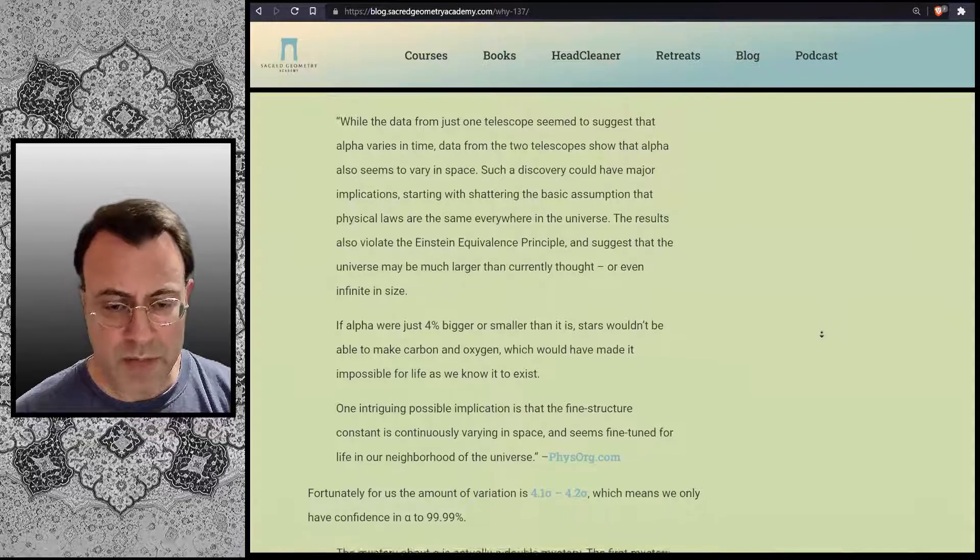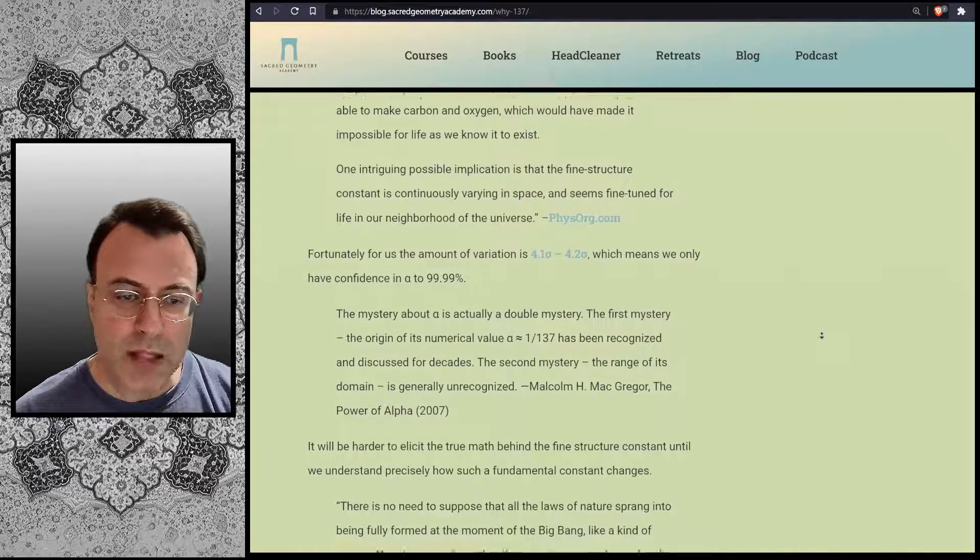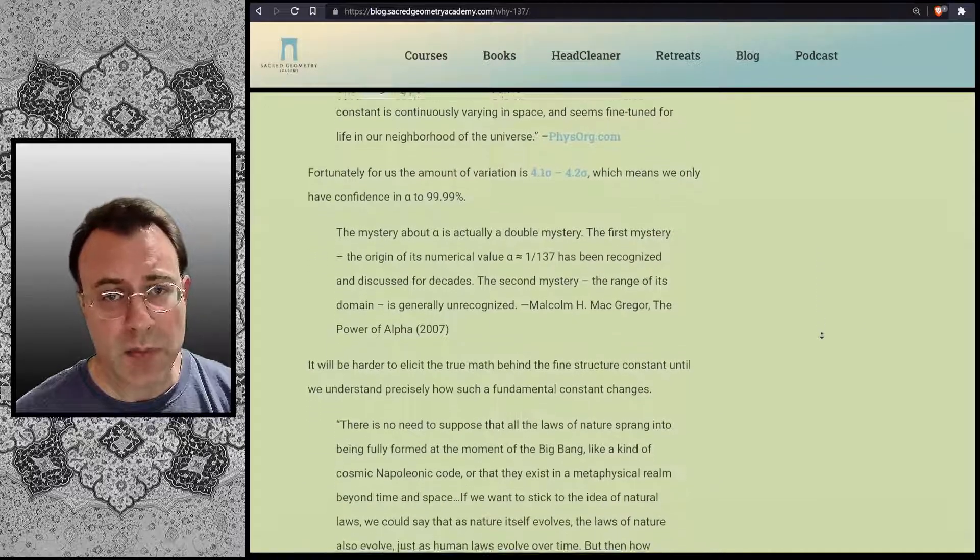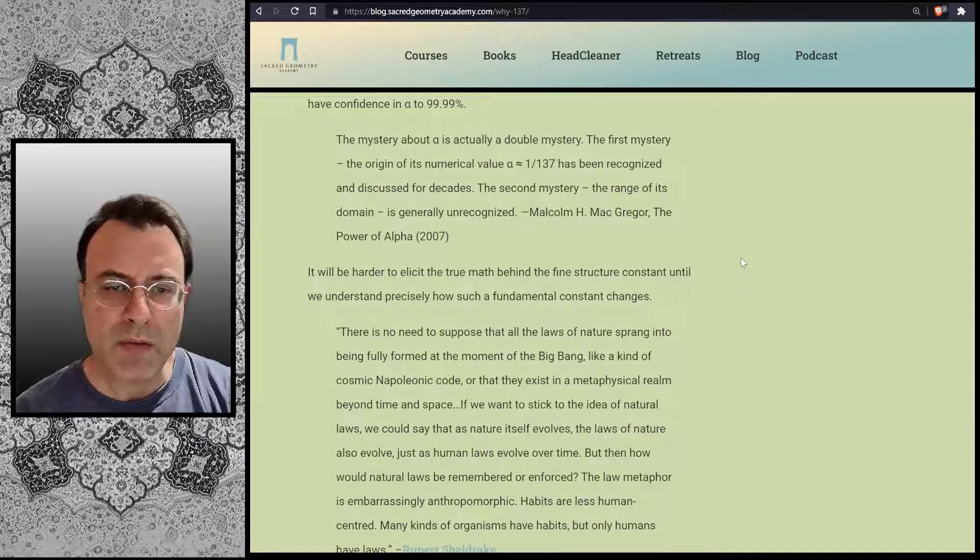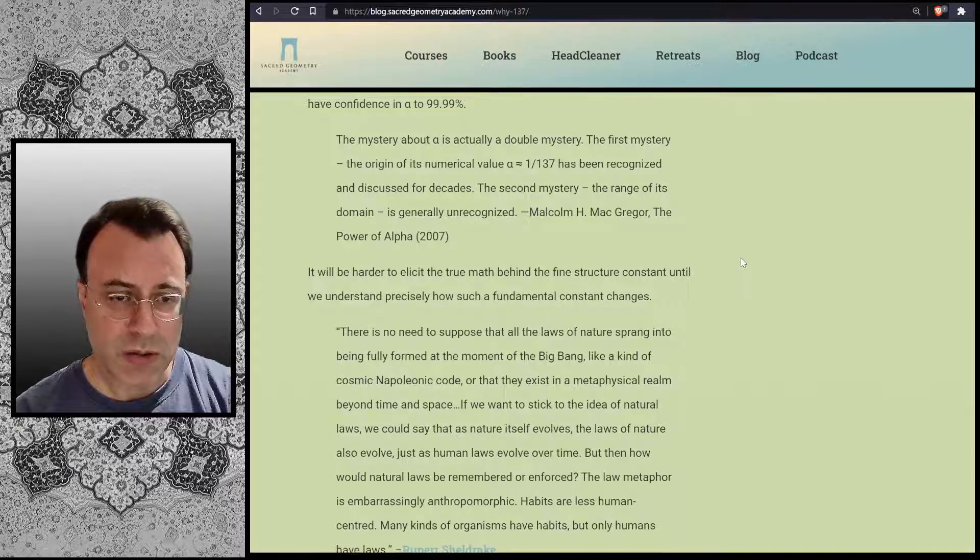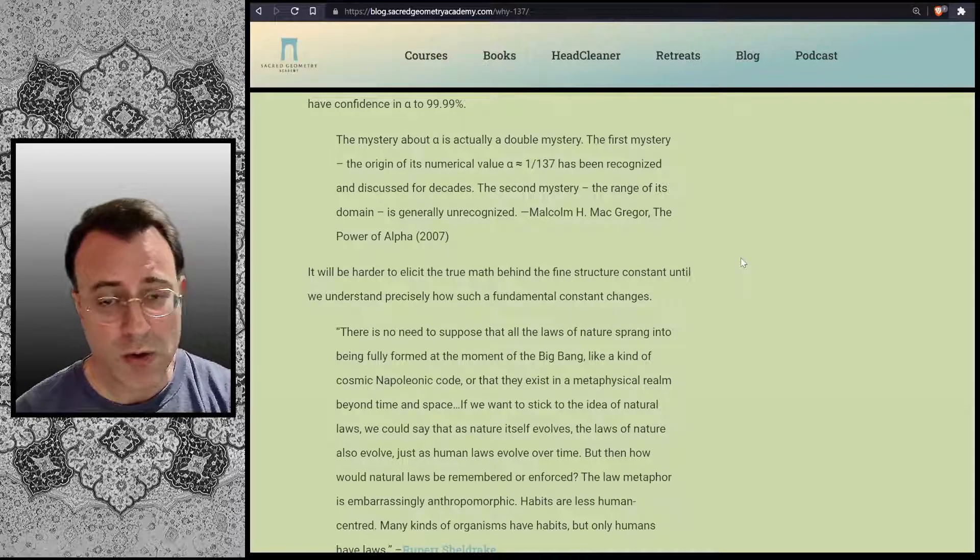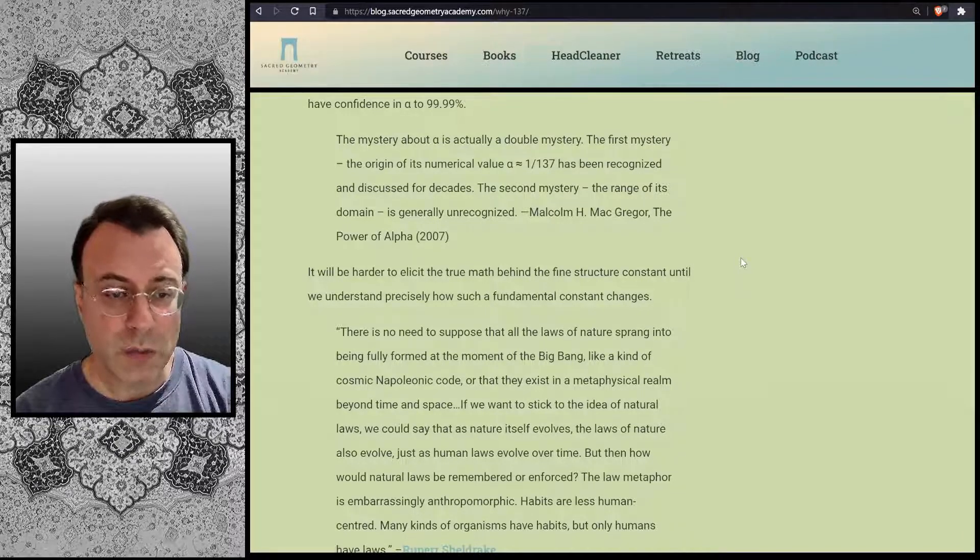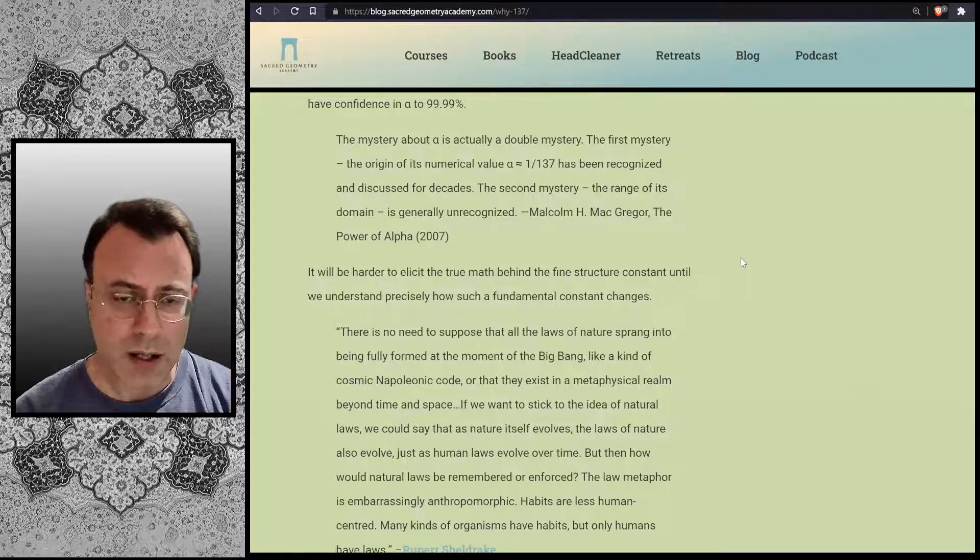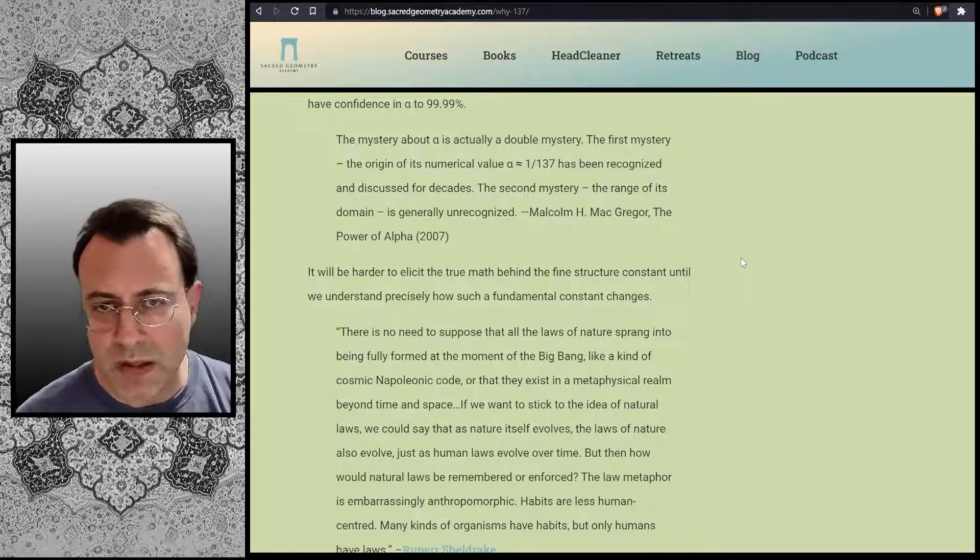Fortunately for us, the amount of variation is 4.1 sigma to 4.2 sigma, which means we only have confidence in alpha to 99.99%. The mystery about alpha is actually a double mystery. The first mystery, the origin of its numerical value, of alpha being approximately 1 over 137, has been recognized and discussed for decades. The second mystery, the range of its domain, is generally unrecognized. Malcolm H. McGregor, The Power of Alpha, published 2007.